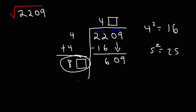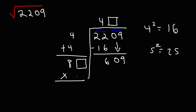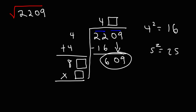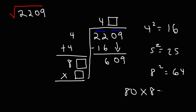80-something times something equals 609. 609 is close to 640, and 64 is a perfect square. We know that 8 squared is 64, so if this is 80-something, 80 times 8 is 640. So we need to try something that's less than 8. Let's try 7.